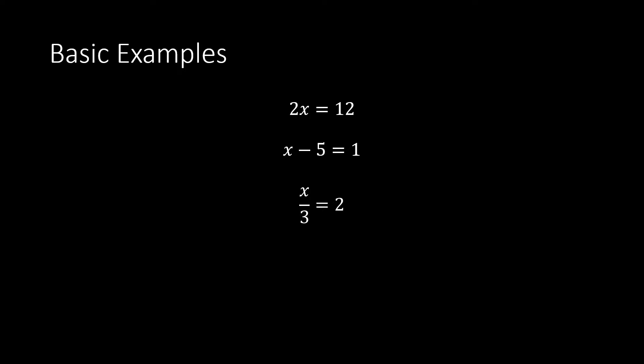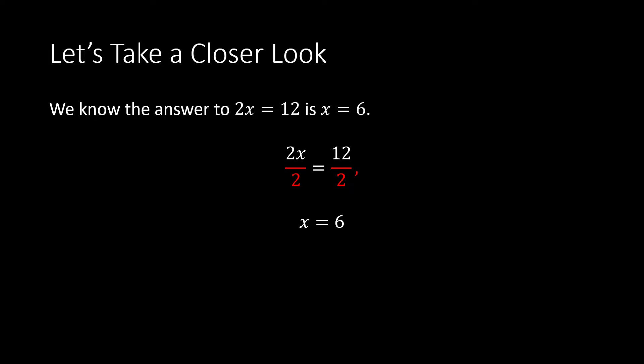So: 2x equals 12 basically means 2 times what will equal 12. Hopefully you know your multiplication tables — the answer is 6, since 2 times 6 equals 12. For the next one, x minus 5 equals 1 is asking what number minus 5 gives us 1, and the answer is again 6. Similarly, x divided by 3 equals 2 also gives x equals 6, since 6 divided by 3 equals 2.